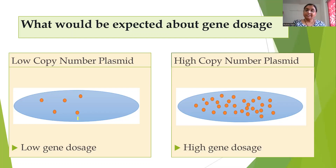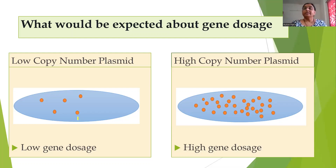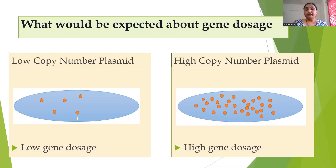When it is a high copy number plasmid, the number of foreign genes in the bacterial cell is also at a higher level. So the leaky transcription is also at a higher level because the plasmid number is higher. The amount of foreign protein present in the bacterial cell is at a higher level. Since this protein is foreign to the bacterial cell and not required by it, this becomes a problem. When using high copy number plasmids, there may be a metabolic drain.